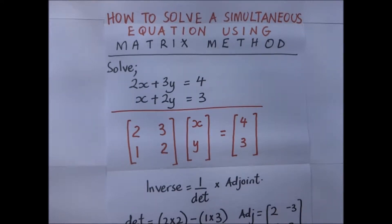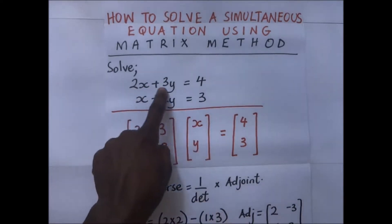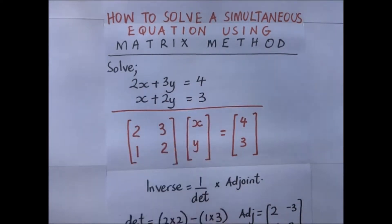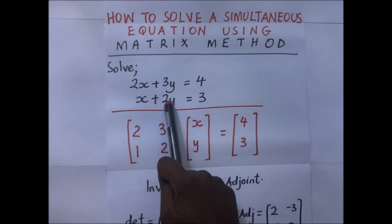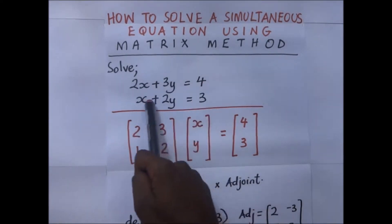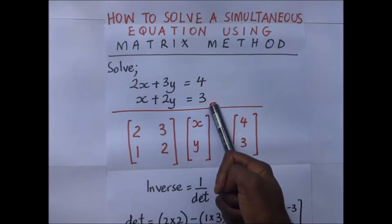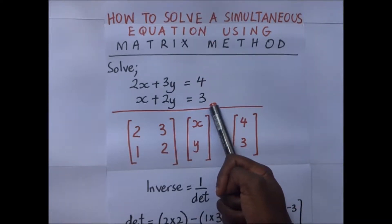We'll illustrate the matrix method using an example. We have these two simultaneous equations: 2x plus 3y is equal to 4, and x plus 2y is equal to 3. These two equations are required to be solved using the matrix method.